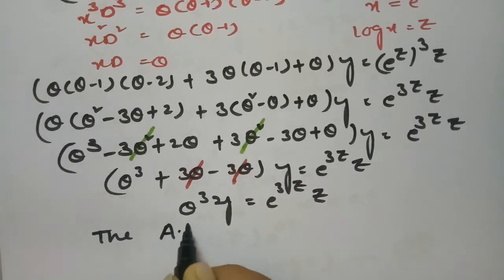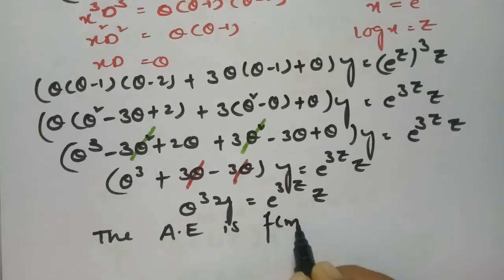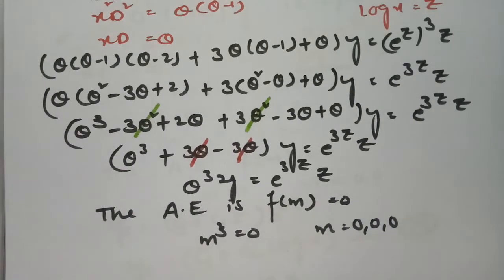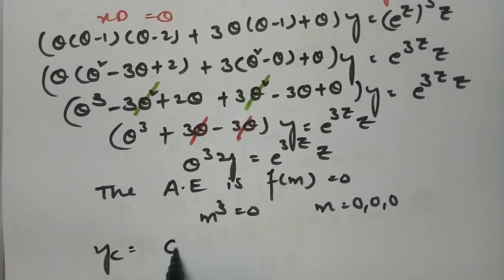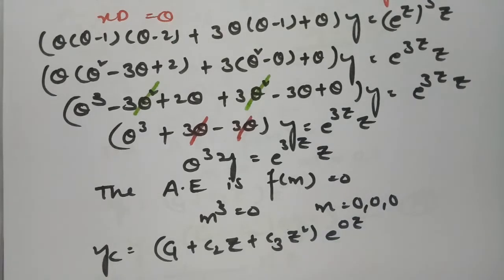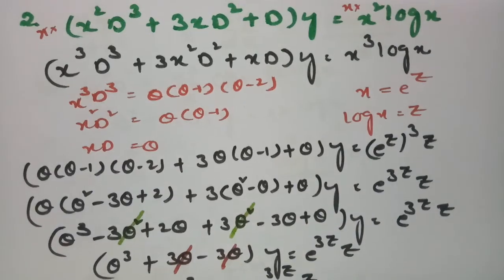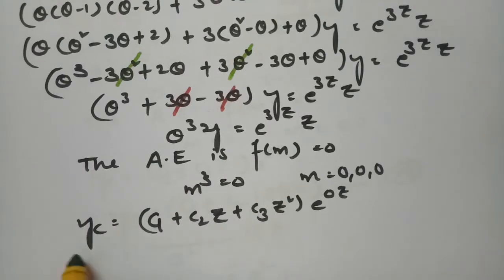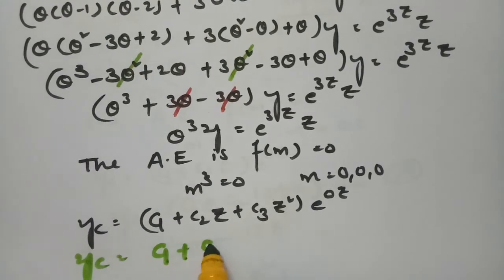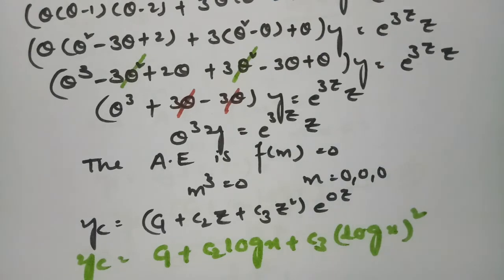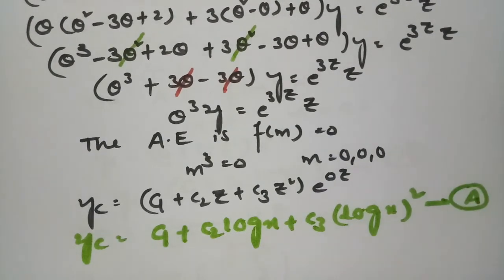For the complementary factor, the auxiliary equation is f(m) = 0, giving m³ = 0, so m = 0, 0, 0 (three repeated roots). Therefore yc = (c1 + c2*z + c3*z²) * e^(0·z). Substituting z = log(x) and e^0 = 1, we get yc = c1 + c2*log(x) + c3*(log x)².